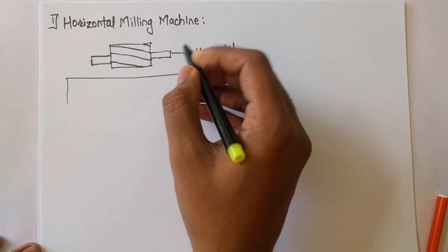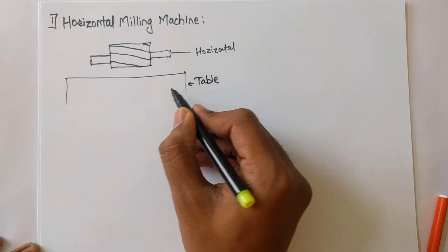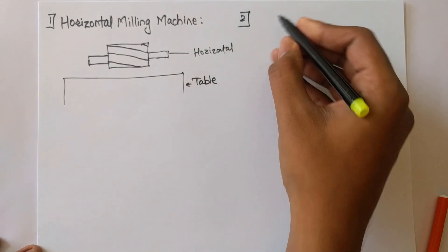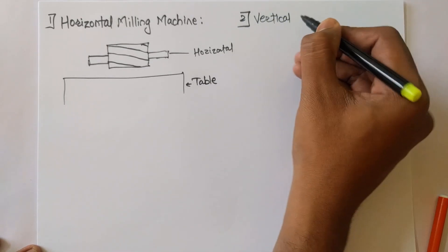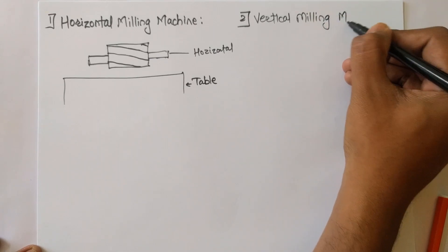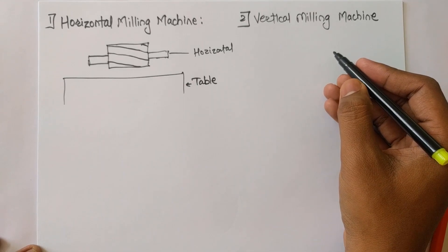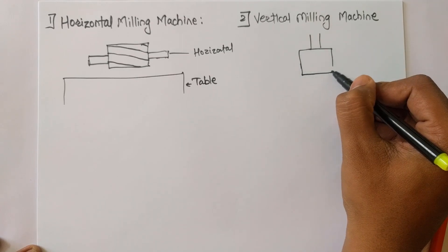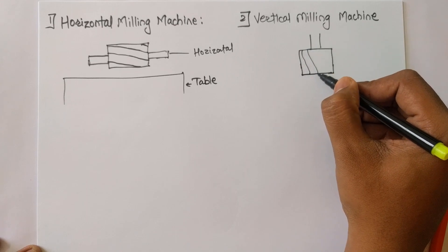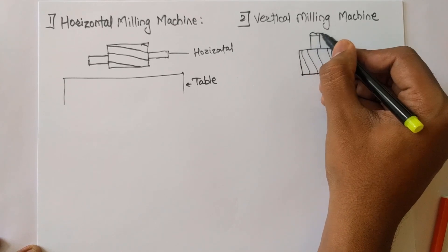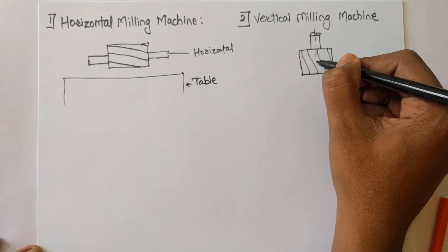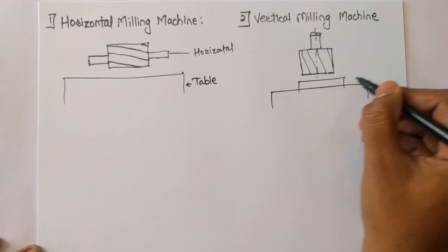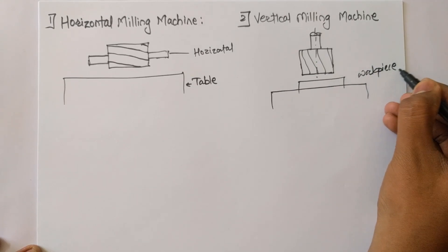There may be an arrangement for holding the tool in place and the table. Similarly, the second type is the vertical milling machine. In the vertical milling machine, the axis of the milling cutter is vertical, and the bed will be horizontal. There will be a workpiece rested on the table.